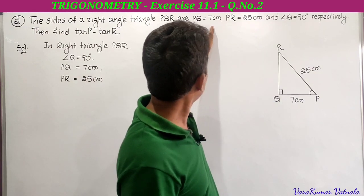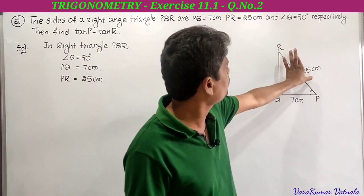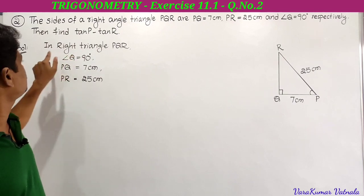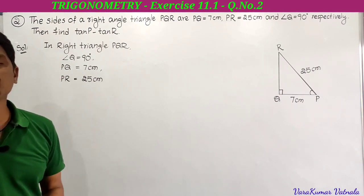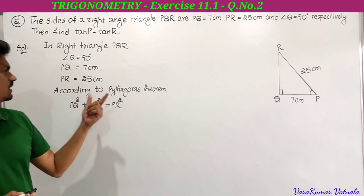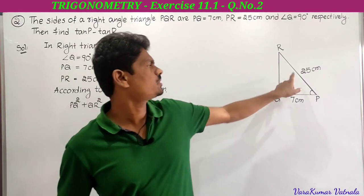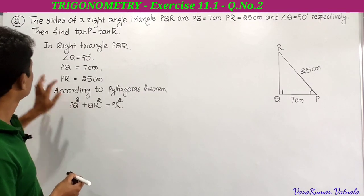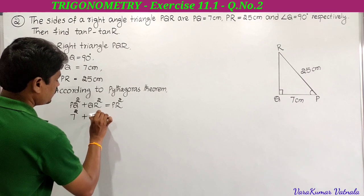PQ equal to 7 centimeters, PR equal to 25 centimeters. He is asking to find tan P minus tan R. According to Pythagoras theorem, PQ square plus QR square equals PR square — the square on the hypotenuse equals the sum of squares on the other two sides.